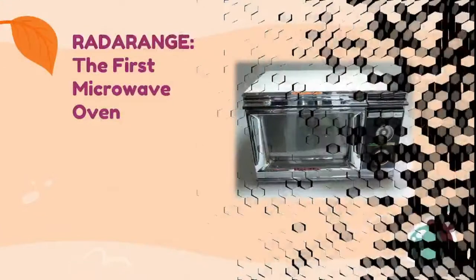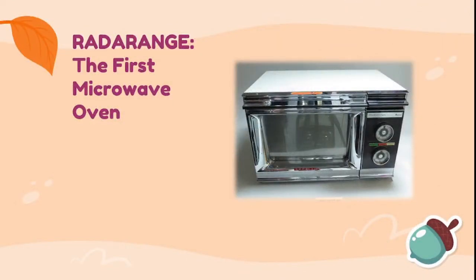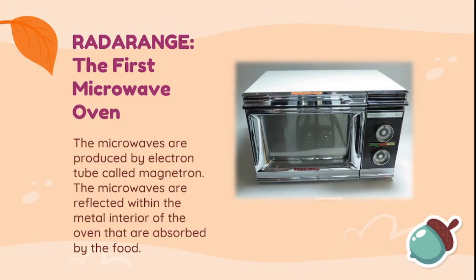And lastly, we have the Radar Range, the first microwave oven. The microwaves are produced by an electron tube called a magnetron. The microwaves are reflected within the metal interior of the oven and are absorbed by the food. Today, it is used in the gourmet industry to create different kinds of dishes worldwide.